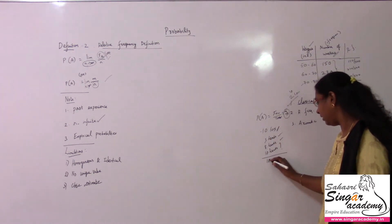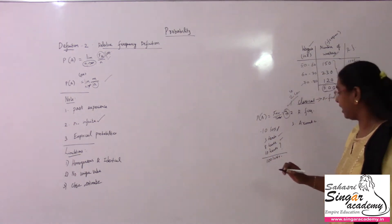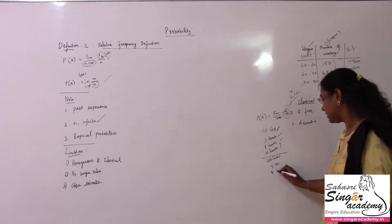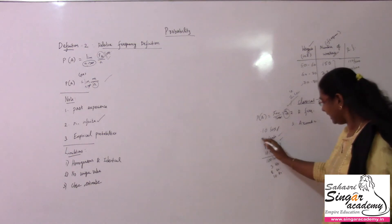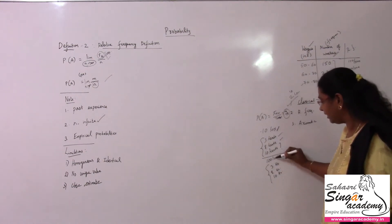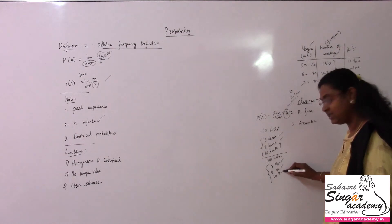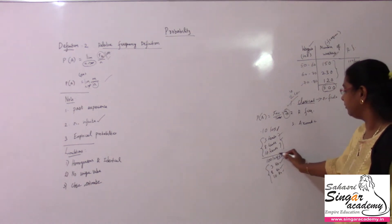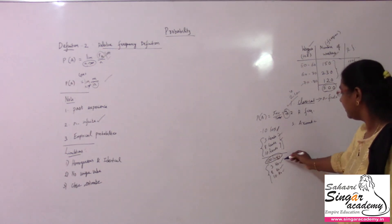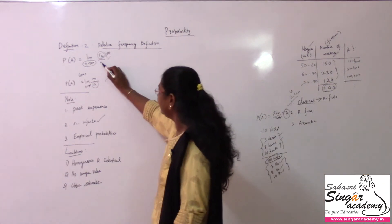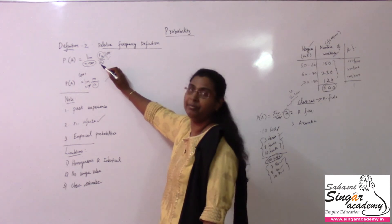Instead of 10 tosses, if I give you 100 tosses and ask for 3 heads — definitely possible. 8 heads possible, 10 heads possible at the same number of trials. With 100 instead of 10, there is a possibility of 3, 8, and 10 more confidently. This is the limit n tends to infinity concept — as this n goes on and on, there is more possibility of the event appearing.